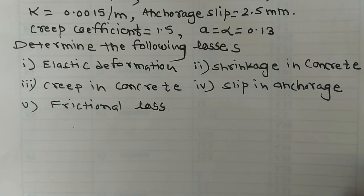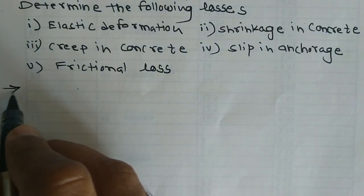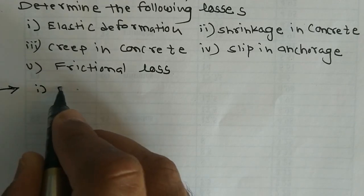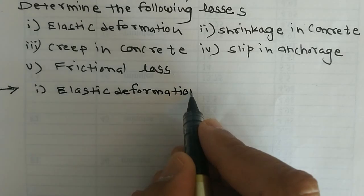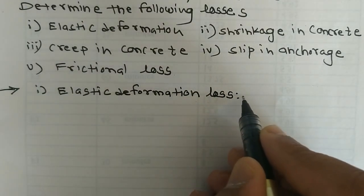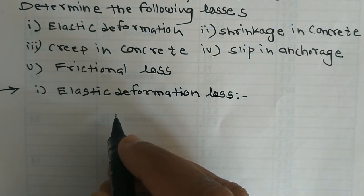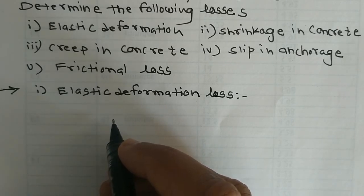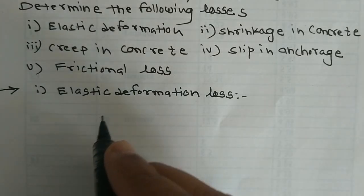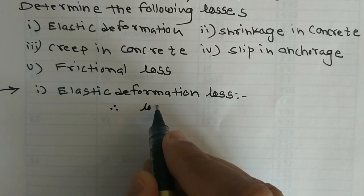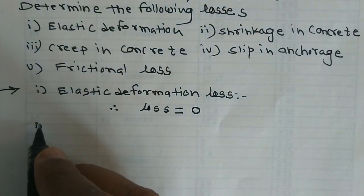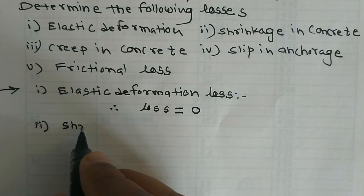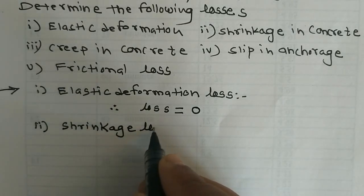First, let us calculate the elastic deformation loss. The given beam is a post-tension beam. When the wires are stretched at the same time, the elastic deformation loss in a post-tension beam is zero. So, assuming the wires are tensioned at the same time, the elastic deformation loss in this case is zero.